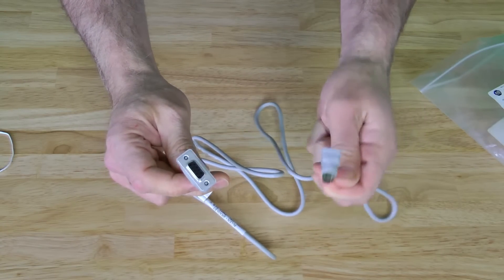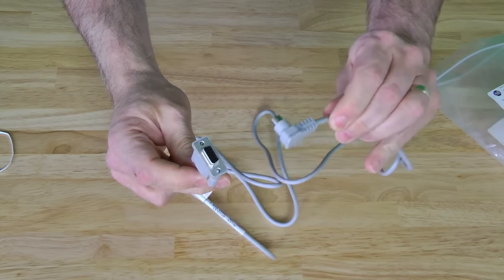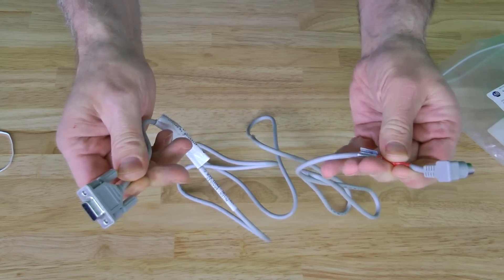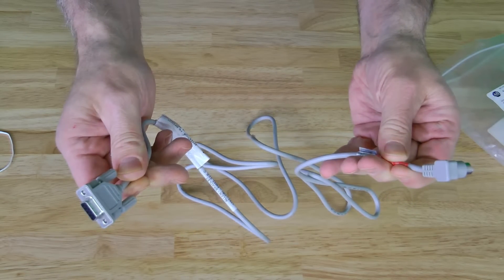On one side you can see it has a right angle circular mini DIN connector which plugs into the MicroLogix, and on the other side it has a standard 9-pin D-shell connector to plug into the DB9 serial port of your computer.